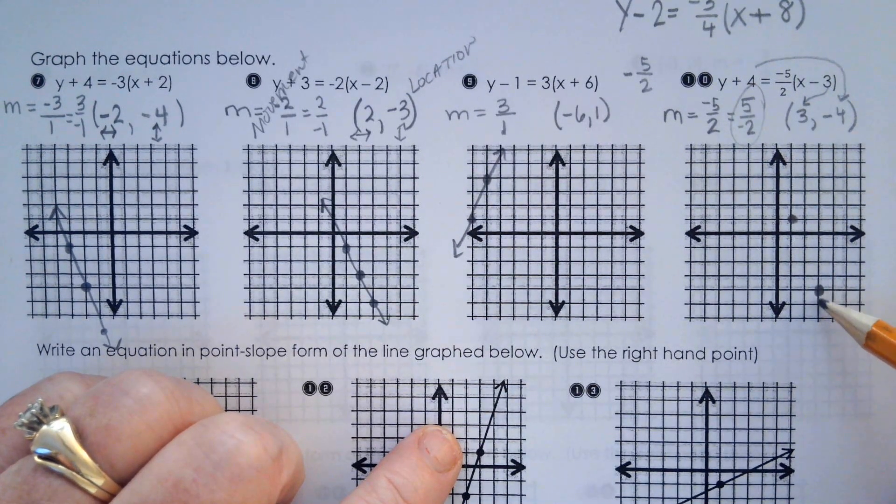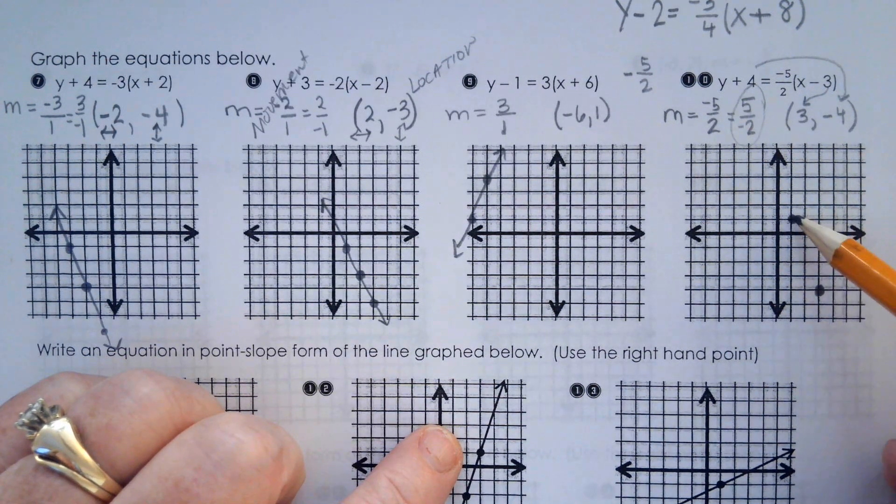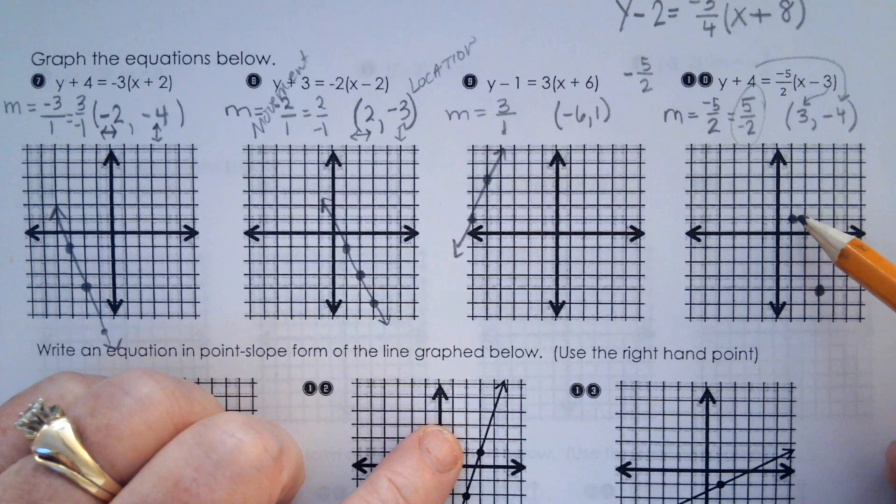We run into situations like this where moving down 5 and over 2, we run out of graph. But if we move up 5 and back 2, that's the same relationship.